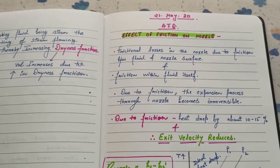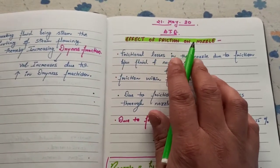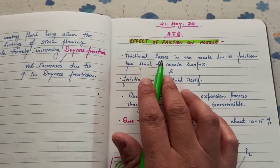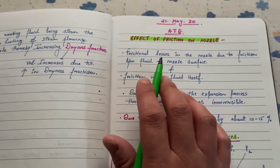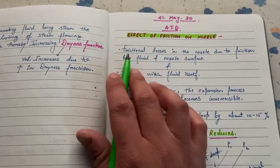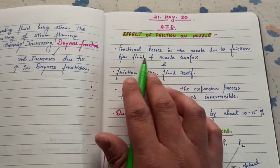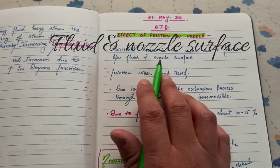Hello students, in this video we will be discussing the effect of friction on nozzles. First, the frictional losses in the nozzle occur due to friction between fluid and nozzle surface. These frictional losses are because of the friction between these two things: first is the fluid and second is the nozzle surface.